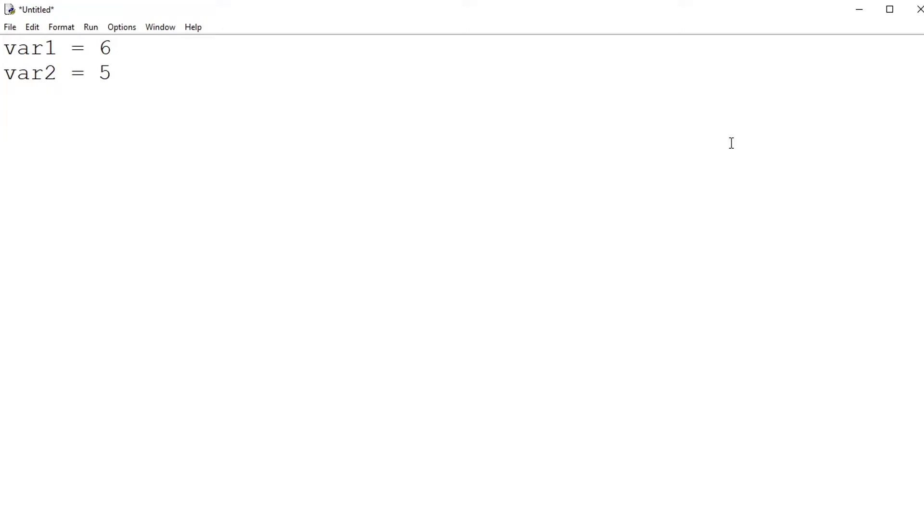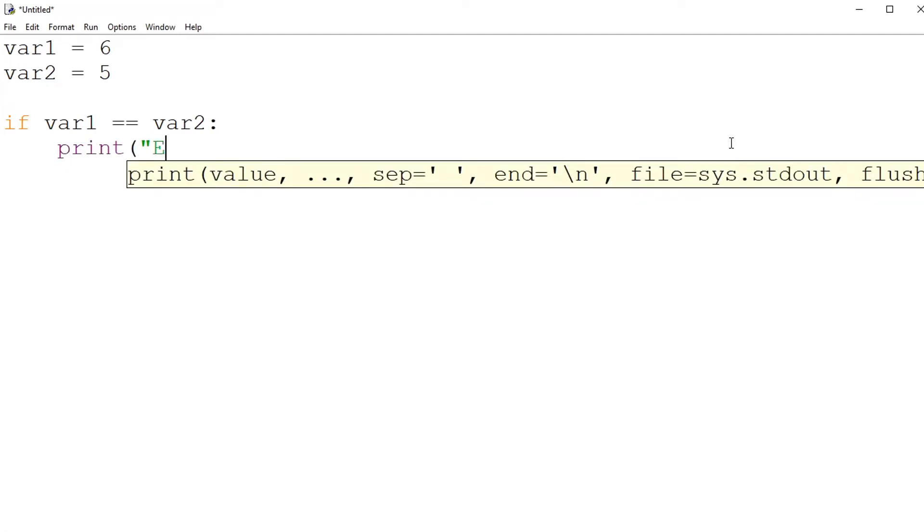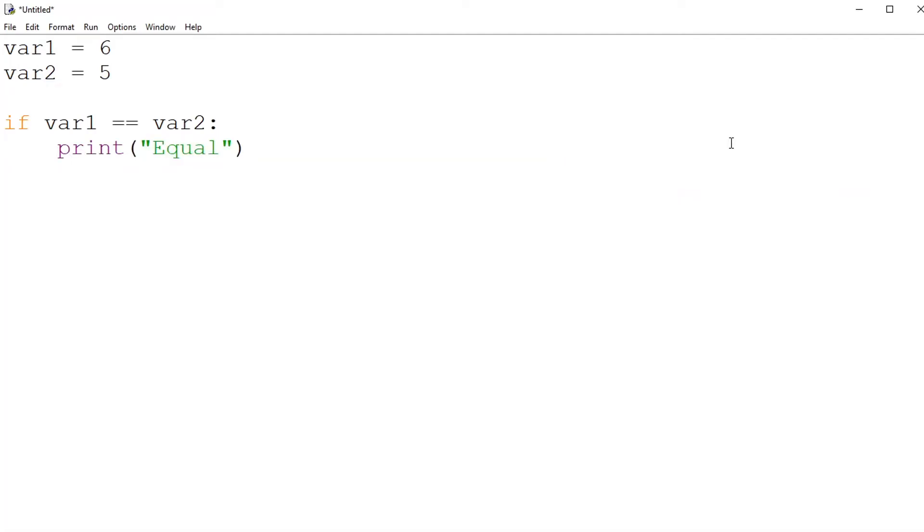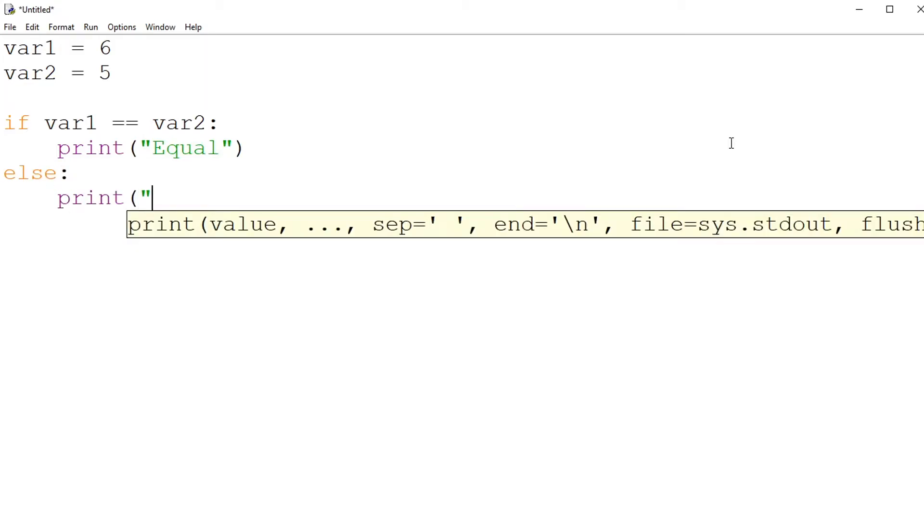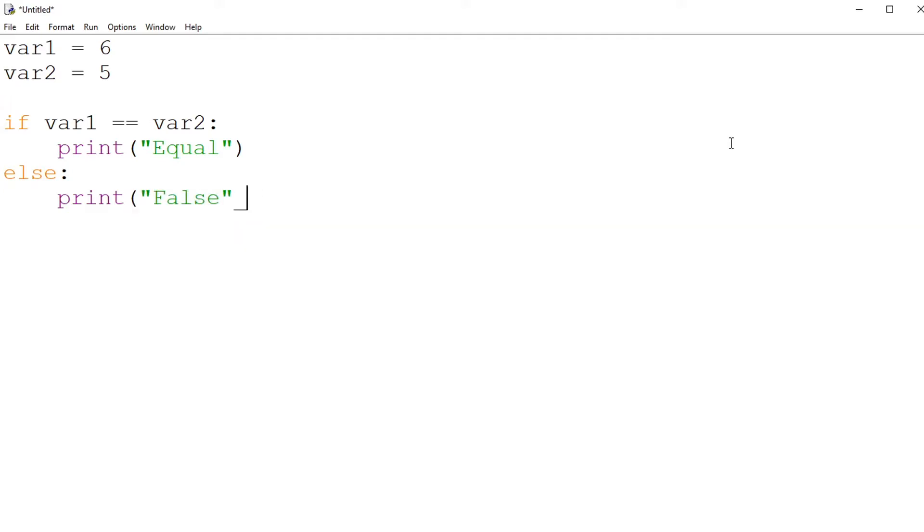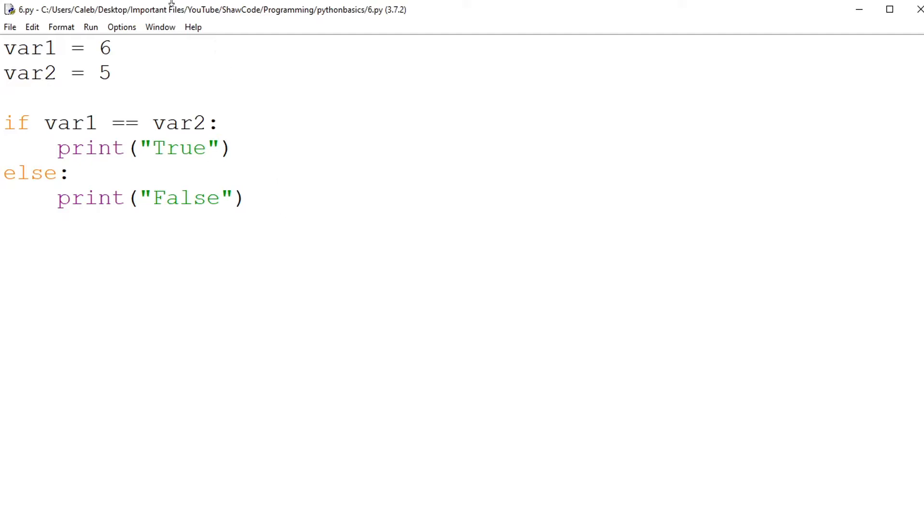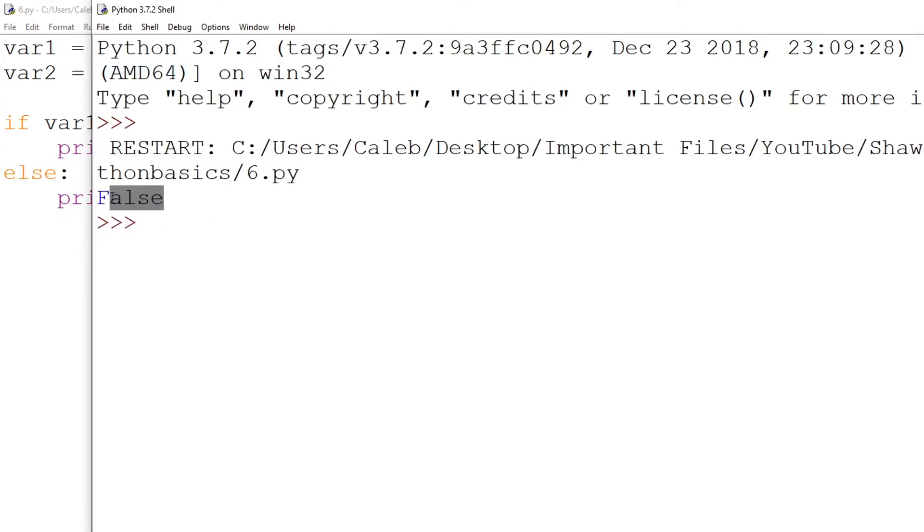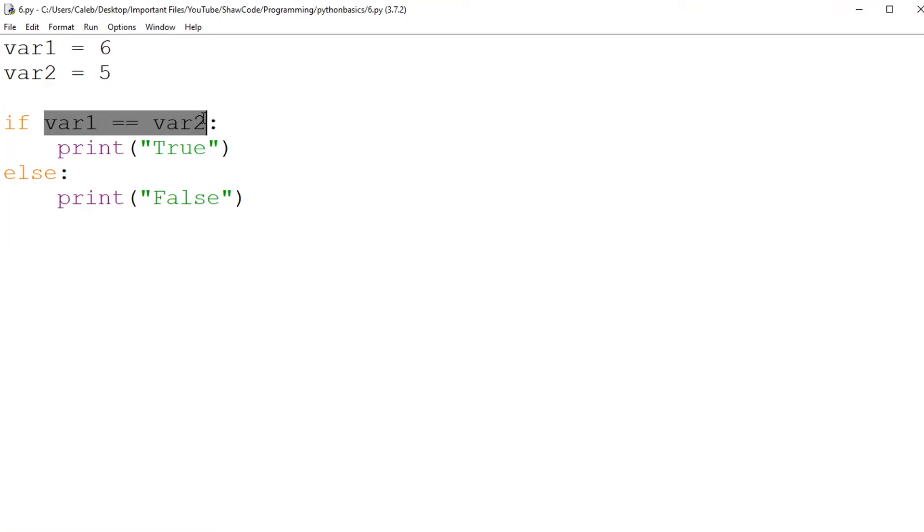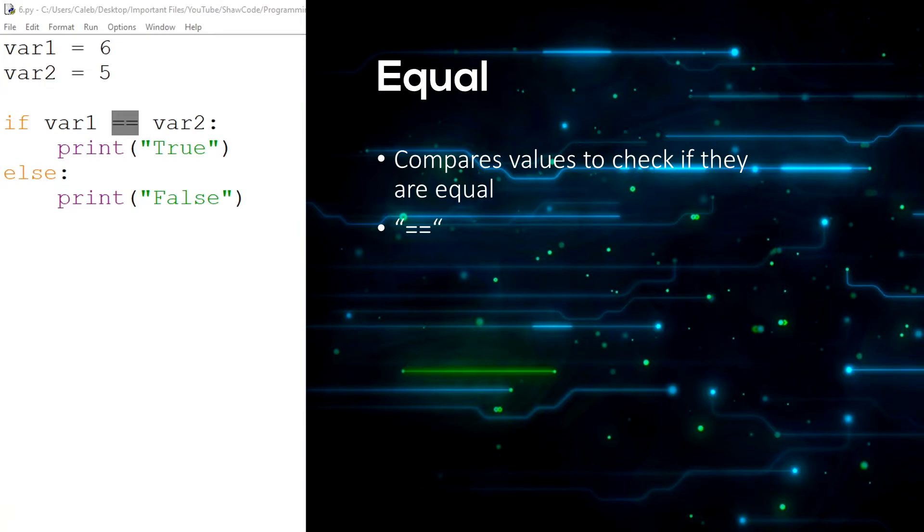Then let's just do an if statement. If var1 is equal to var2, print equals. Else, print false. In fact, let's just change this to true. Save it and then we go and run it. Run module. Then we get false because var1 does not equal var2, as we learned in the last episode. So this is the equal operator which we learned in the last video, and it compares two values to see if they are equal.